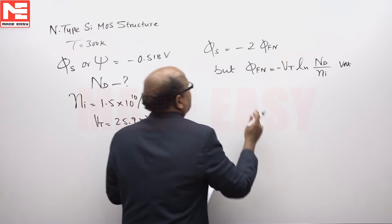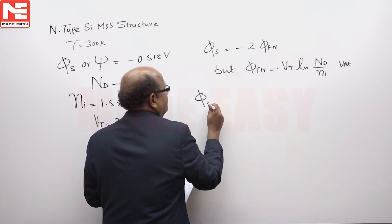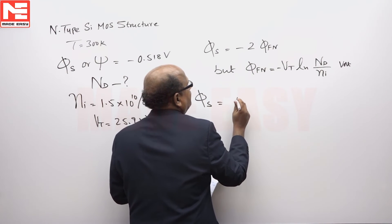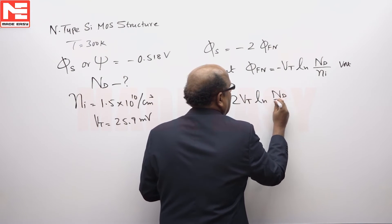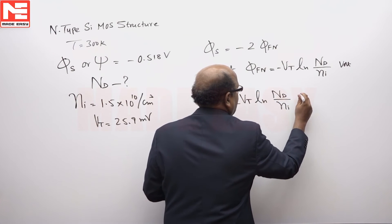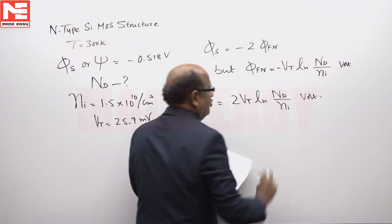Right, substituting this value here, phi_s will be equal to 2 V_t Ln(N_d/n_i) volts.